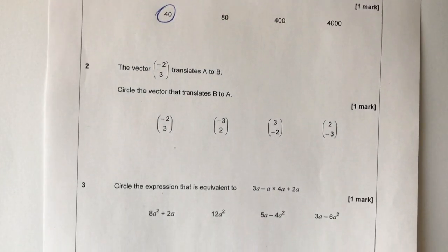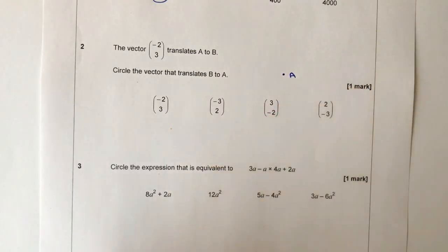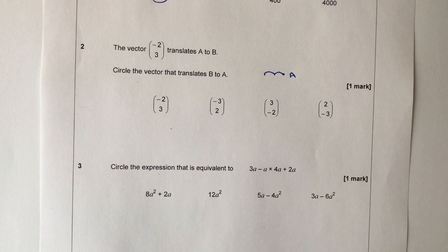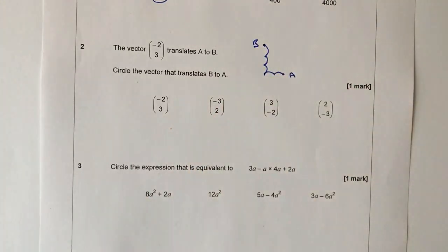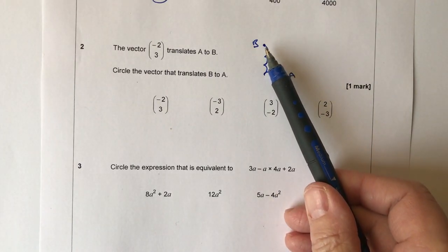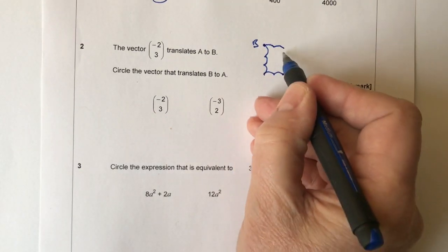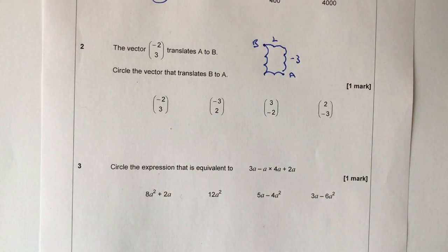Question two is about a vector. The vector translates minus 2, 3 — so starting at A, you go minus 2 in the x-direction and 3 upwards, ending at B. We need to circle the vector that translates B back to A. Going back, we remember: along the corridor then down the stairs — so we go along 2 and down 3. That's the answer.